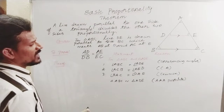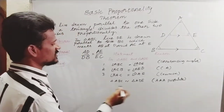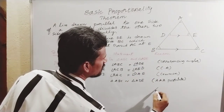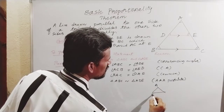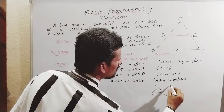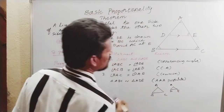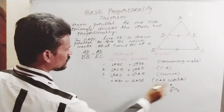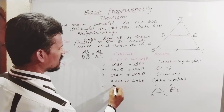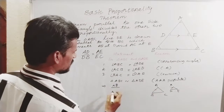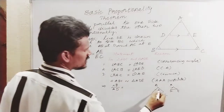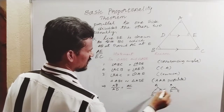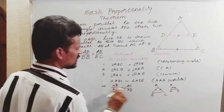You know that for similar triangles, corresponding sides are proportional. So for triangles ABC and ADE, the corresponding sides give us: AB/AD is equal to AC/AE. These are the corresponding sides in proportion, which is why we write this.